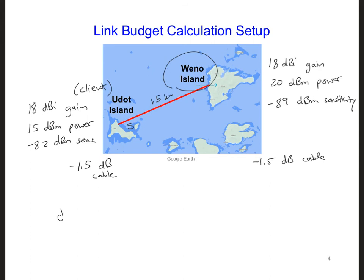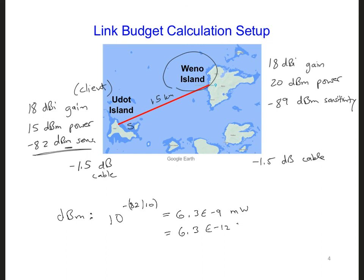Just a quick note about dBm. If I take, say, this minus 82 dBm value and I want to convert it to linear values, I would do the log base 10 in reverse. So I would have 10 to the power of minus 82 over 10, and that would give me 6.3 × 10⁻⁹. And since it's in dBm — the m stands for milliwatts — the units here are milliwatts. So if I want to convert that to watts, it would be 6.3 × 10⁻¹² watts.